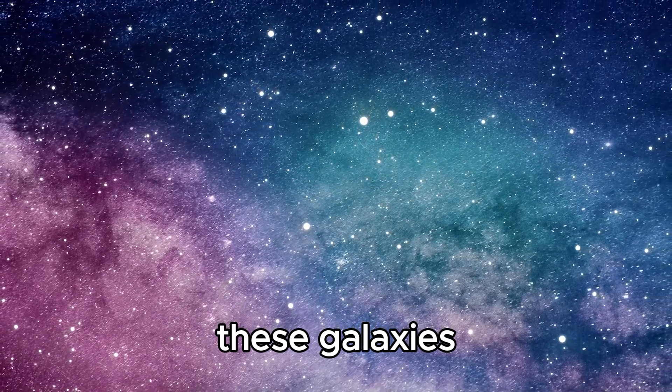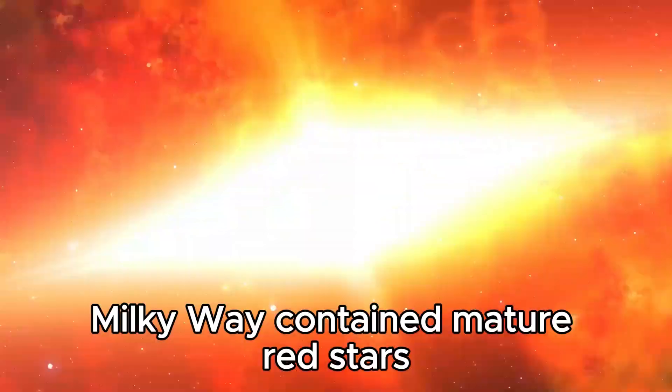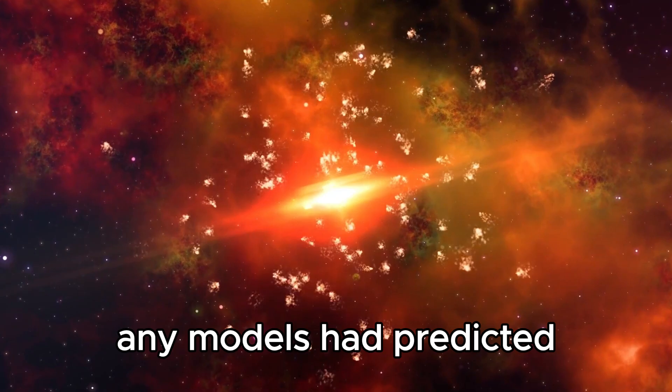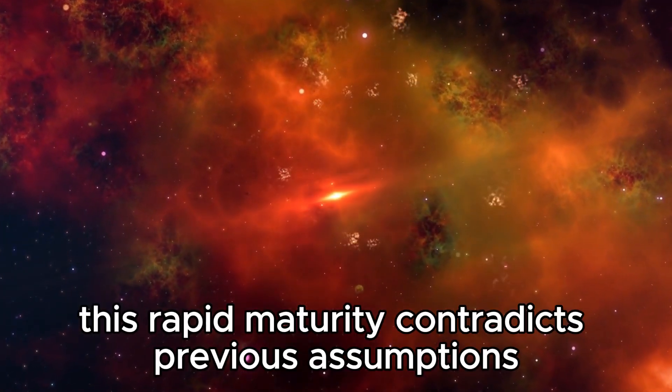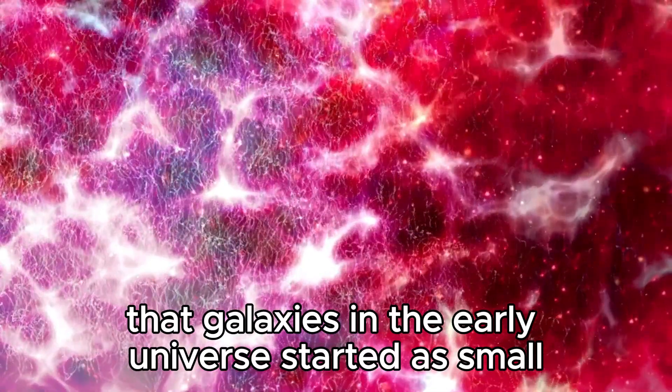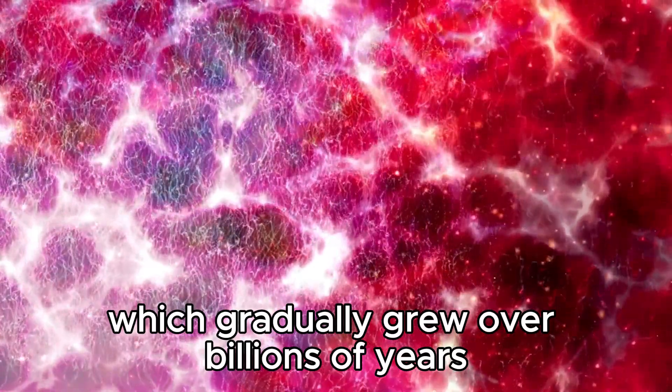These galaxies, each comparable in mass to our 13 billion-year-old Milky Way, contained mature red stars, suggesting that they developed far more rapidly than any models had predicted. This rapid maturity contradicts previous assumptions that galaxies in the early universe started as small conglomerations of stars and dust, which gradually grew over billions of years.